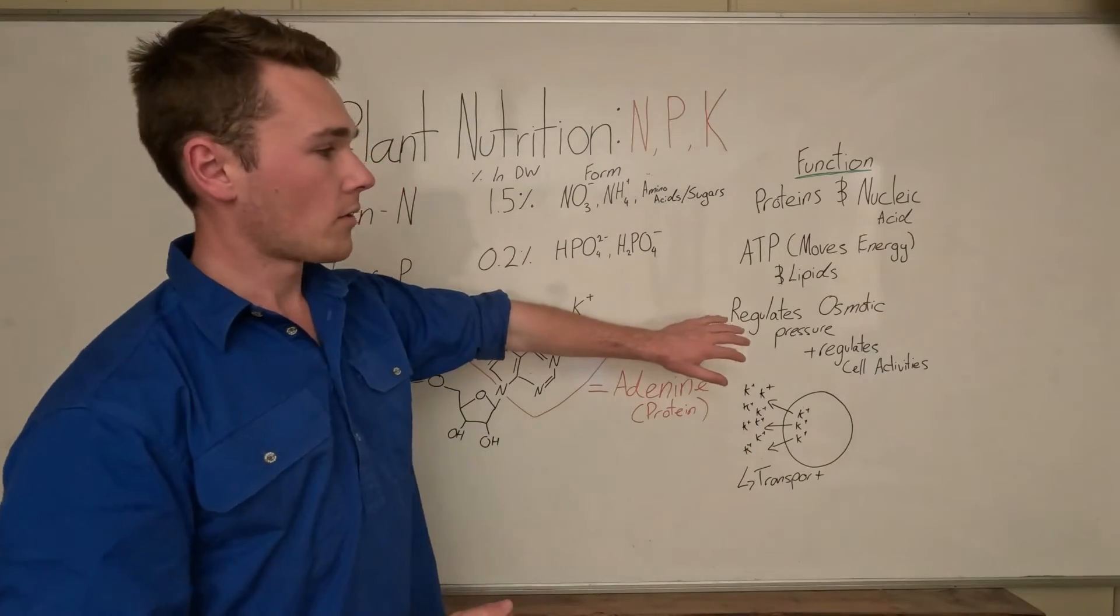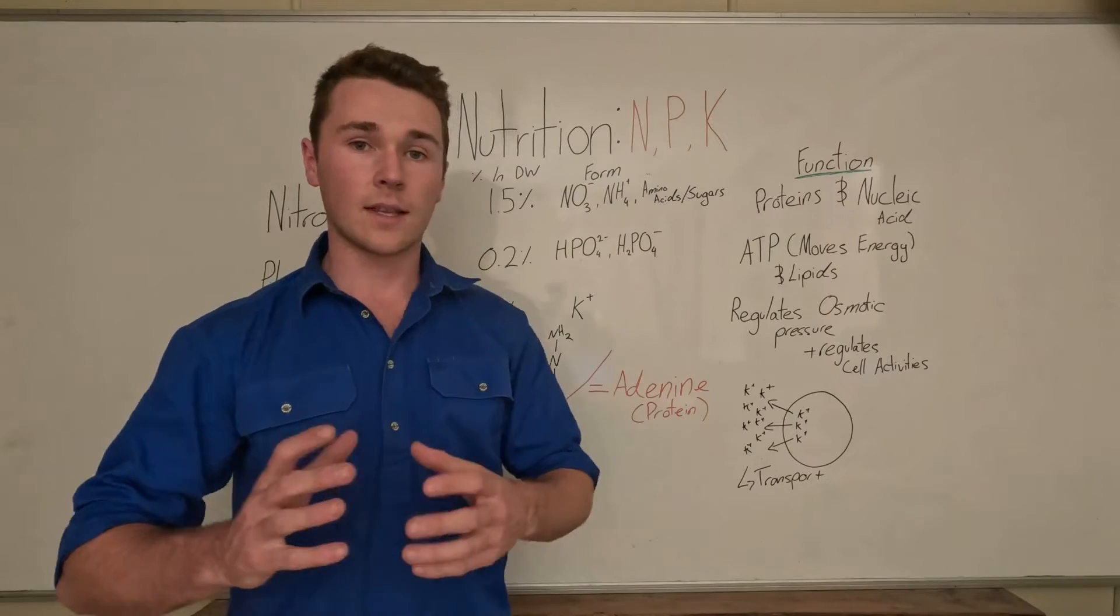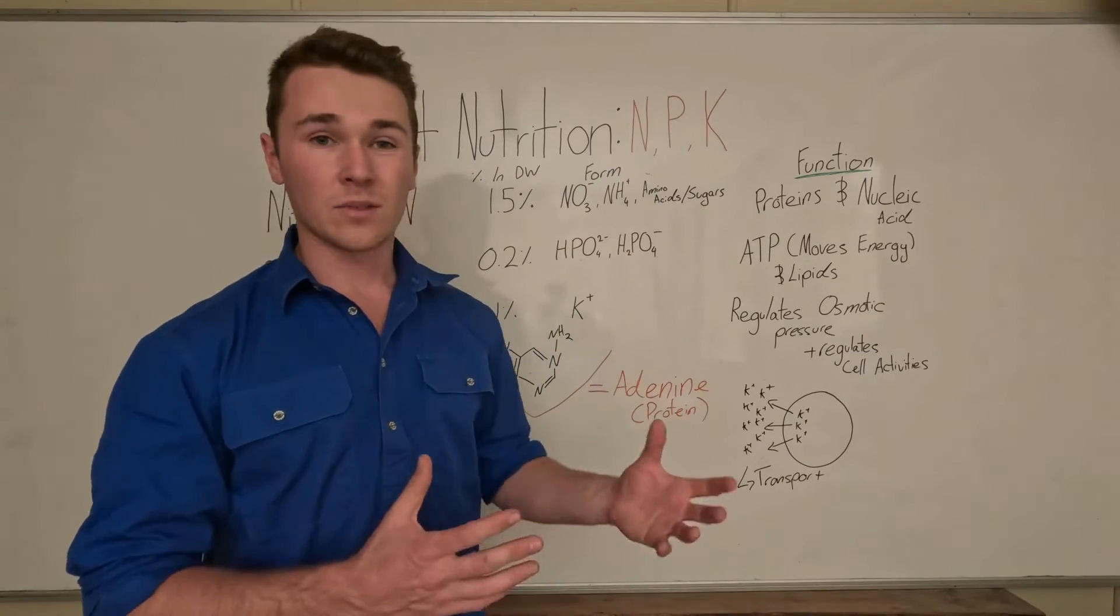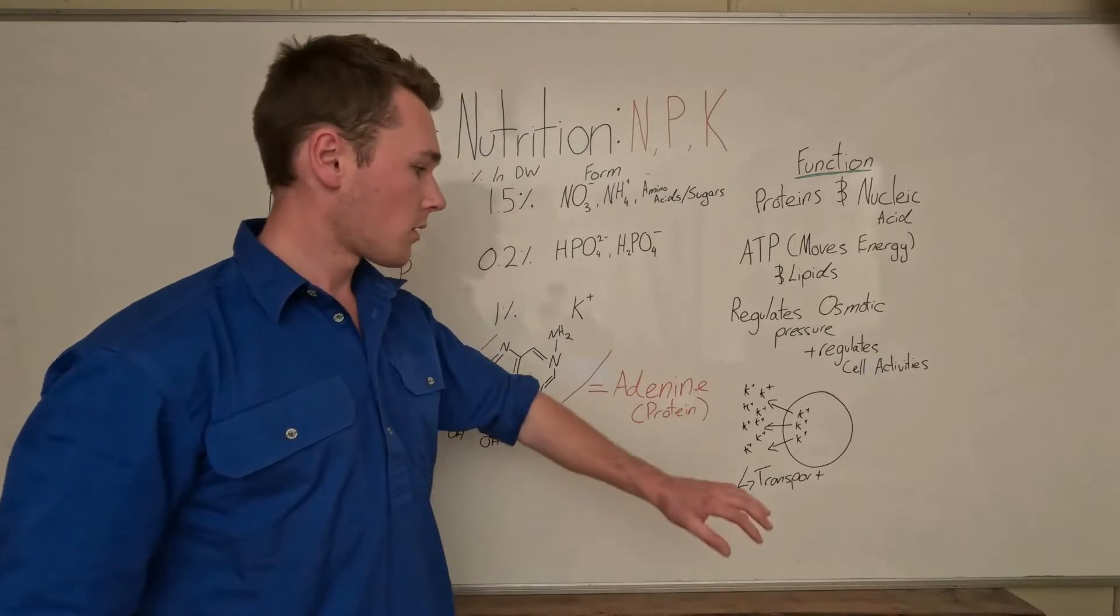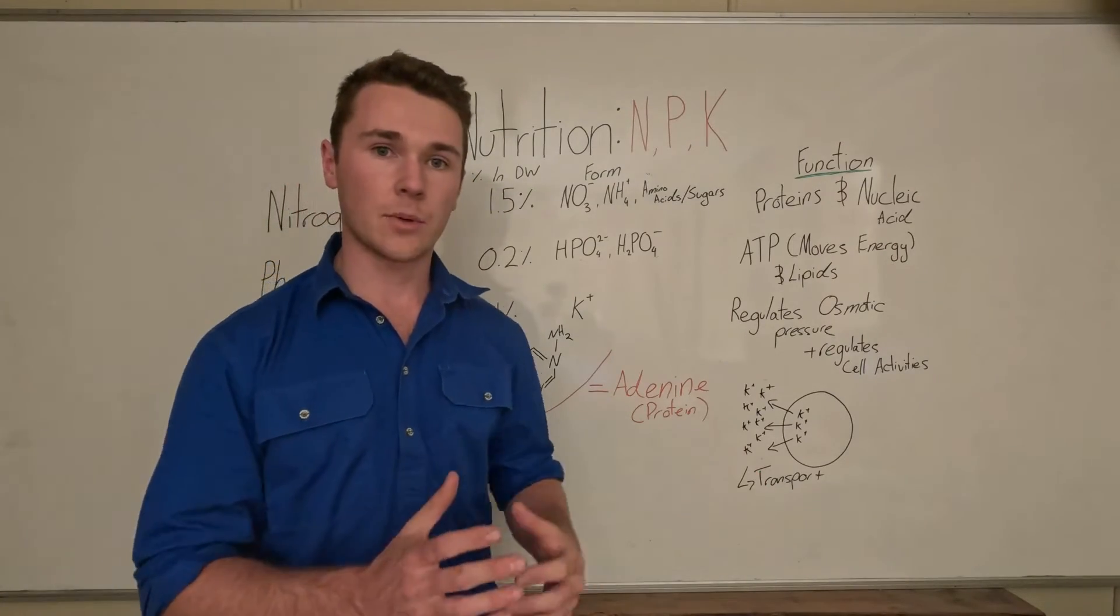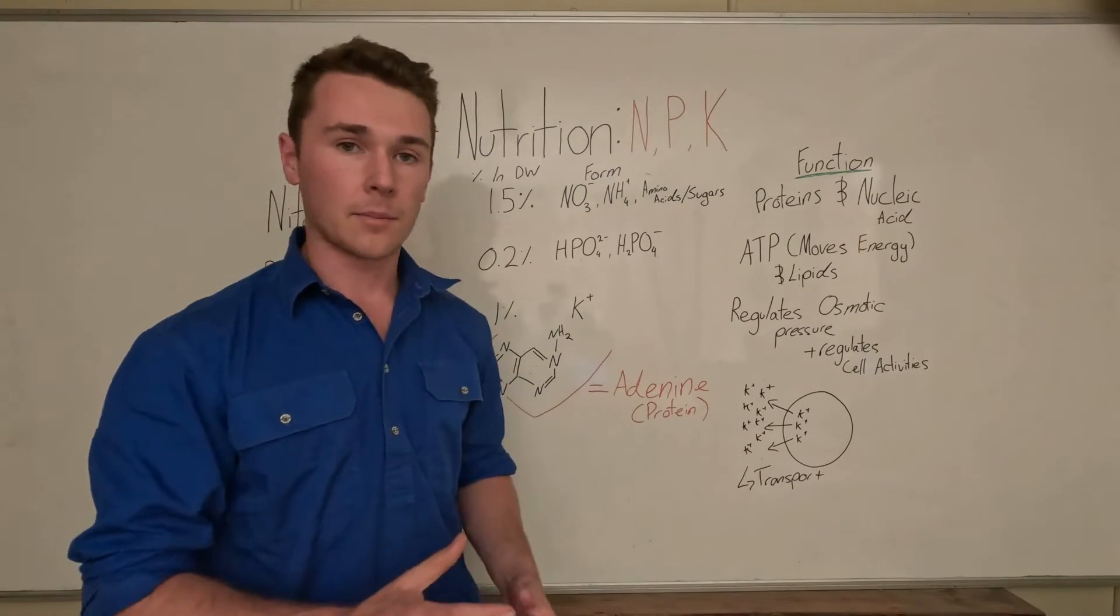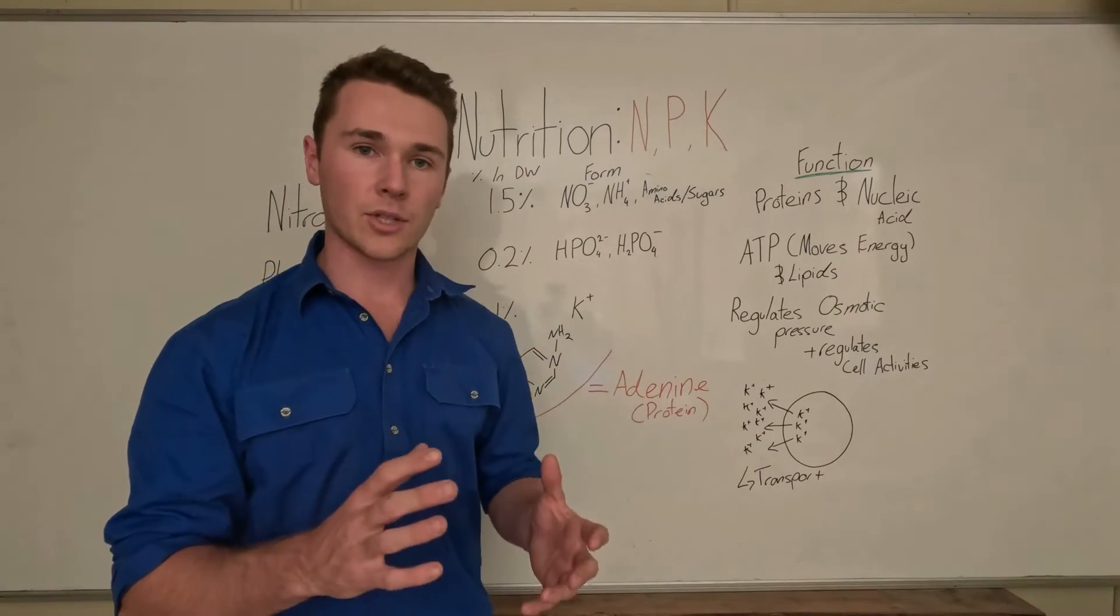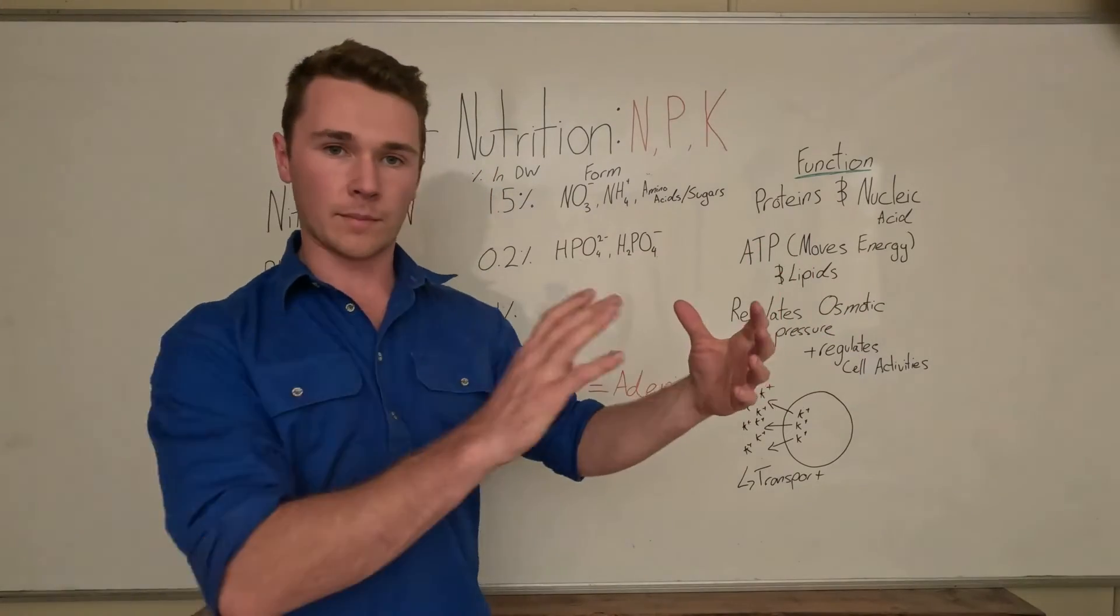With the regulating of osmotic pressure, that's going to really impact the way that nutrients, water, and even carbohydrates are transported across our plant. When plants want to transport nutrients, they load potassium into a particular part of the plant to increase the osmotic pressure. When you have a high pressure and a low pressure, you get movement between those two areas.